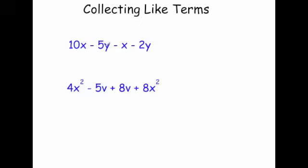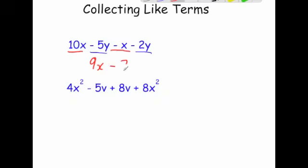Lastly: 10x take away 5y take away x take away 2y. We've got 10x's take away x — that's 10x take away 1x, which is 9x. Now be careful with the y's: we have minus 5y take away 2y, so minus 5 take away 2 would be minus 7y. So the answer would be 9x minus 7y.